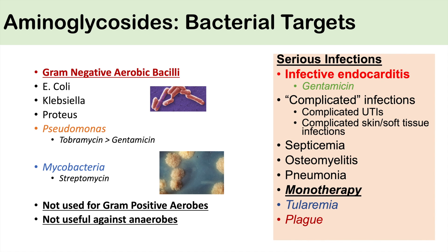Treatments with aminoglycosides are for serious infections. Since they're administered parenterally via IV, the patient is likely admitted to hospital. These include infective endocarditis, which is generally treated with gentamicin as part of the backbone treatment. They're also used for complicated UTIs, complicated skin and soft tissue infections, septicemia, osteomyelitis, and pneumonia — in combination with another antibiotic from a different class.